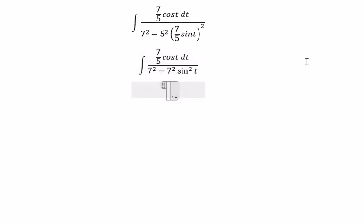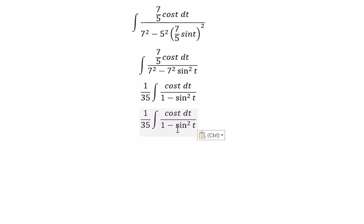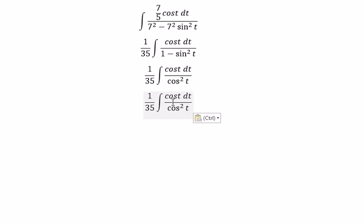1 minus sin² t we can put about cos² t. cos t divide cos t, we got about 1/cos t dt, and this one we can change to sec t.